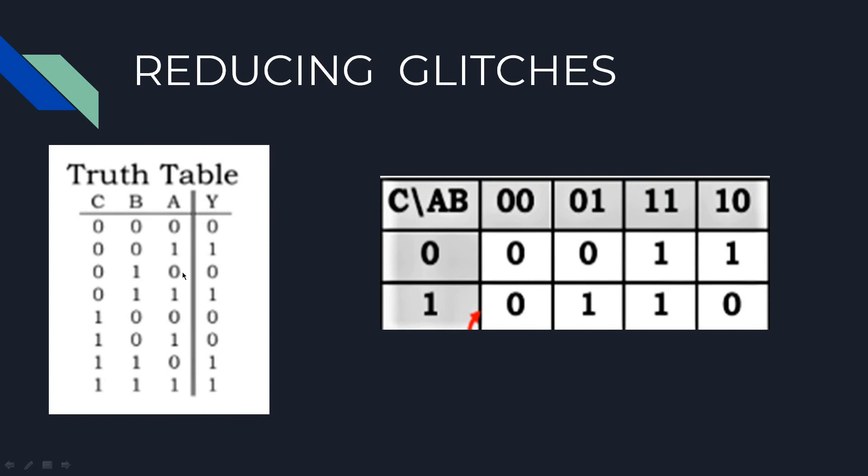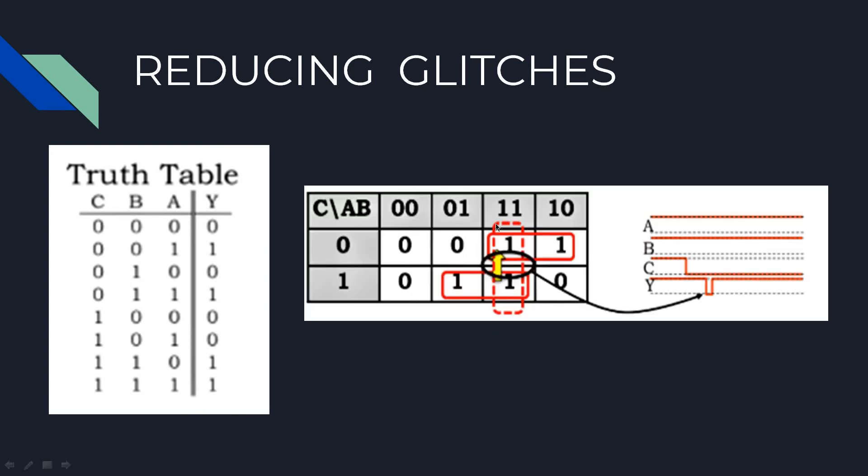Let's consider the truth table and we'll do all the entries again. So this is how the entries are done. To reduce the glitches, here we pair 2 ones and there are 2 pairings. But to reduce the glitches we use 3. So we pair these both ones, we pair these both ones, and we also pair these both to reduce the glitches in the output waveform.